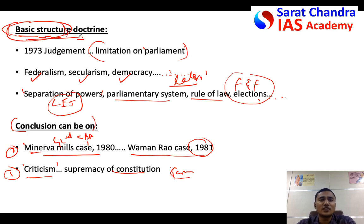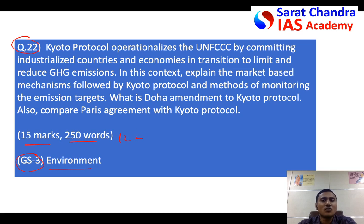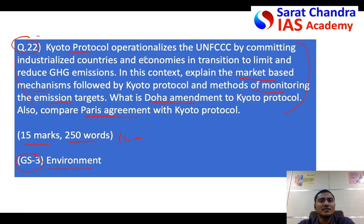The question for tomorrow is question number 22, from General Studies Paper 3 — Environments and International Protocols. It is a 15-mark question of 250 words to be written in 10 to 12 minutes. It is a broad question covering what the Kyoto Protocol is, how it follows market-based mechanisms, how it monitors emission targets, what the Doha Amendment to the Kyoto Protocol is, and a comparison of the Kyoto Protocol with the Paris Agreement. Try to write about each aspect in a few lines and finish the answer in two pages. See you, friends. Bye.